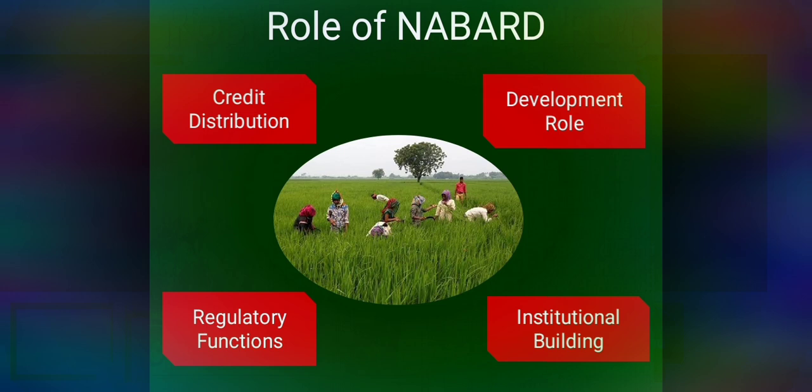The fourth role is institutional building. NABAD helps cooperative banks and RRBs to prepare development action plans for themselves. It helps RRBs and sponsored banks to enter into MOUs specifying their respective obligations to improve the affairs of the RRBs within a stipulated time frame. It also enters into MOUs with state governments and cooperative banks specifying their respective obligations to improve the affairs of the banks within a stipulated time frame.